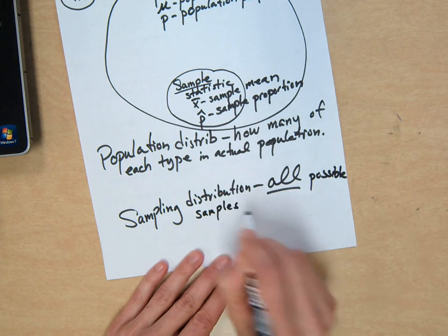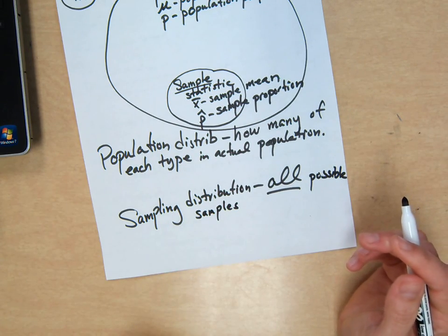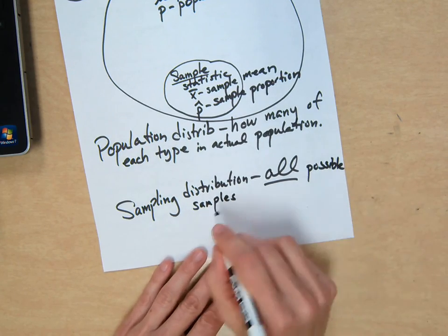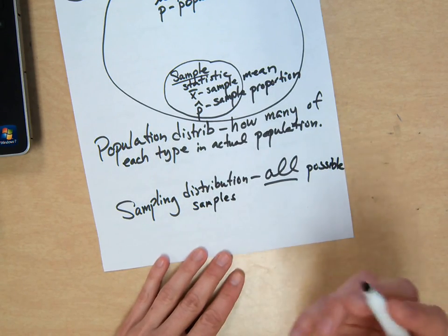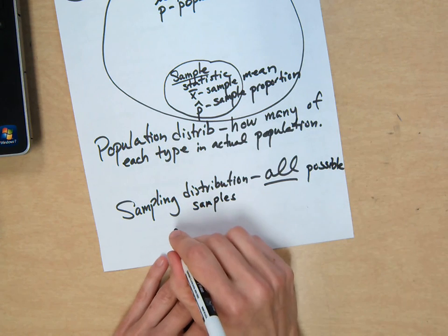Usually what we have is an approximate sampling distribution. So if it's not all possible samples, you say, make sure you use the word approximate sampling distribution.